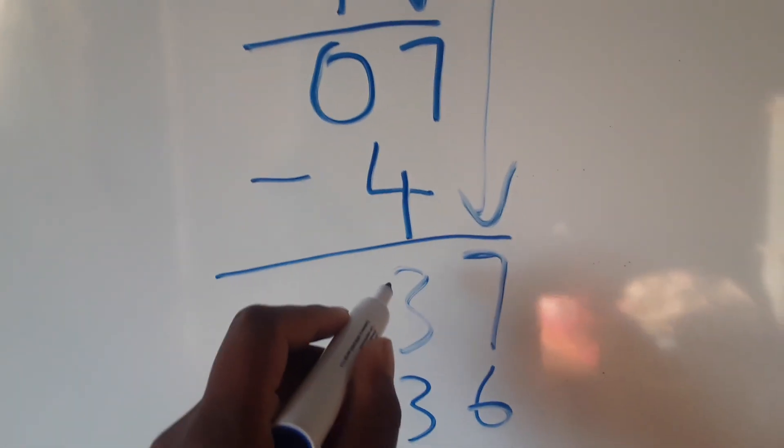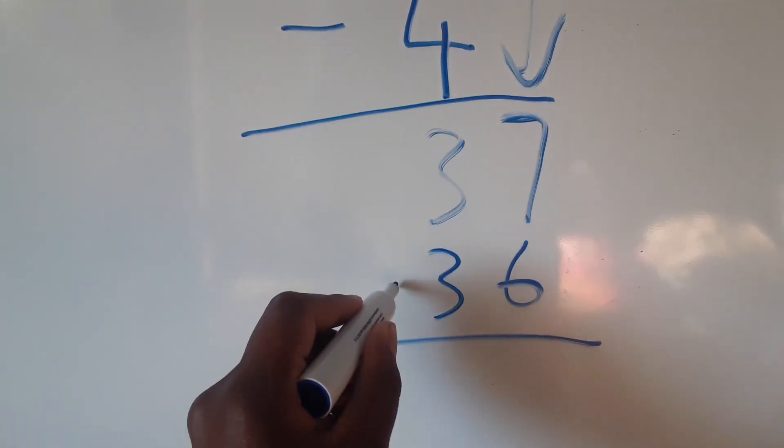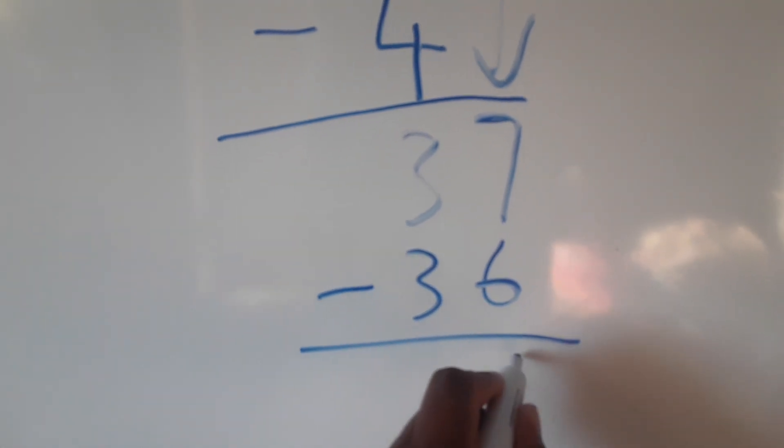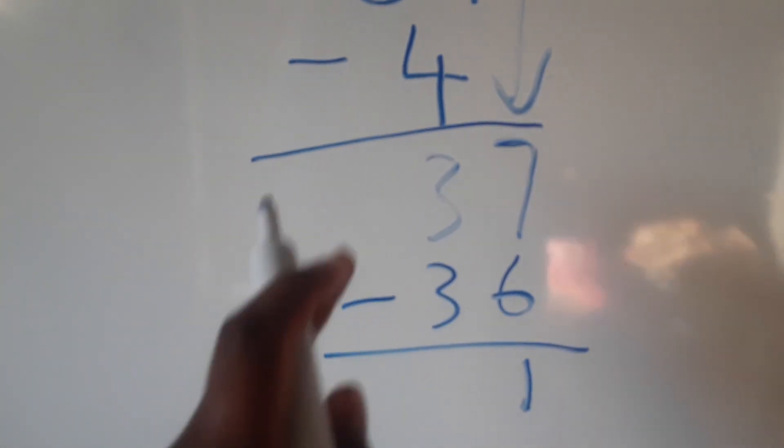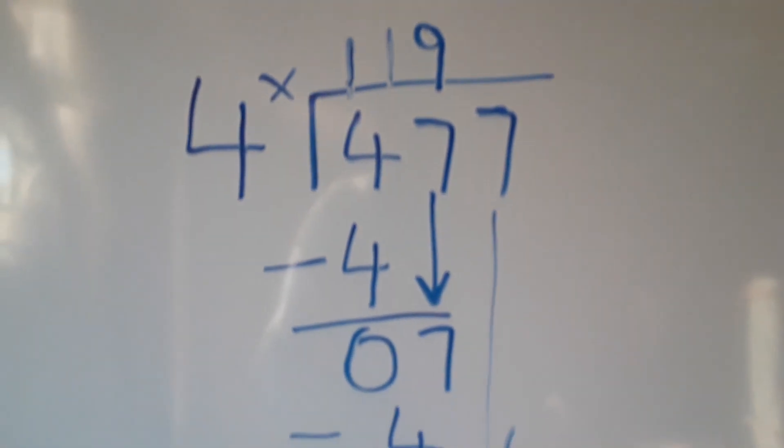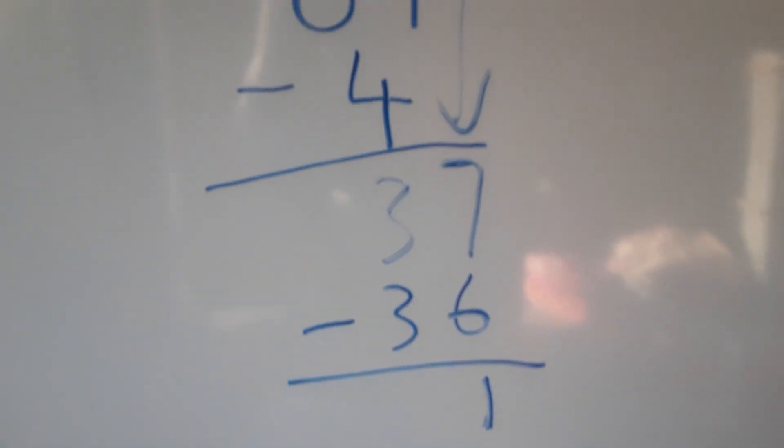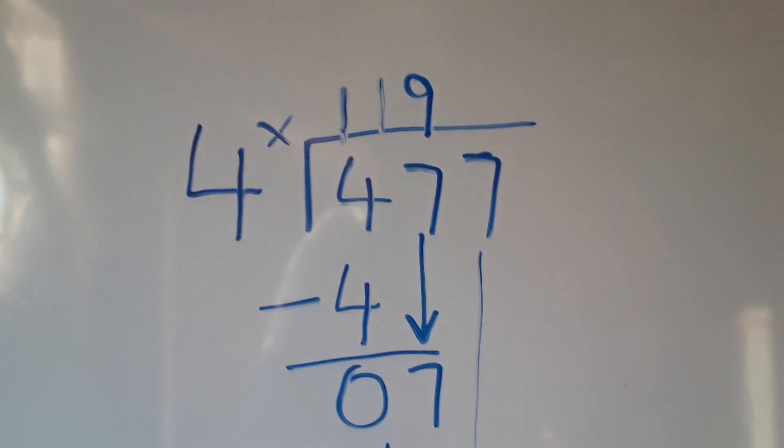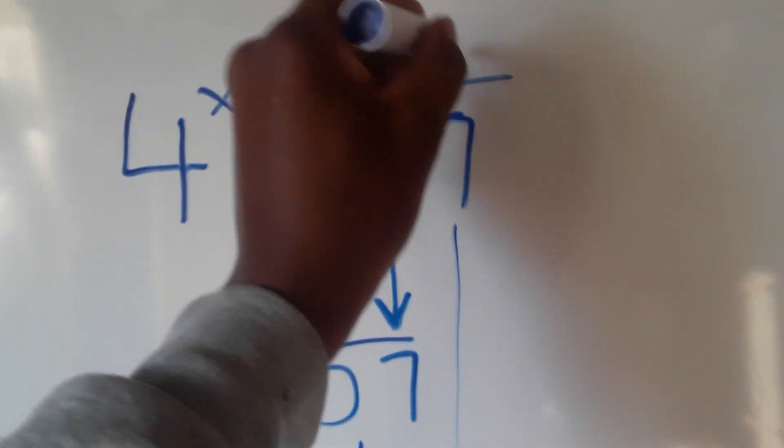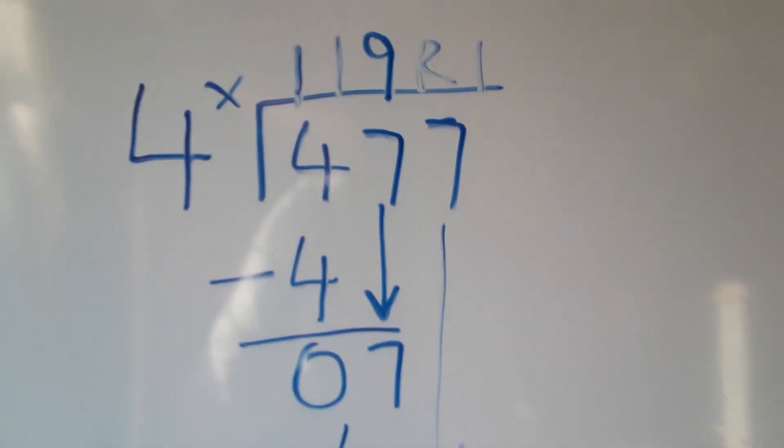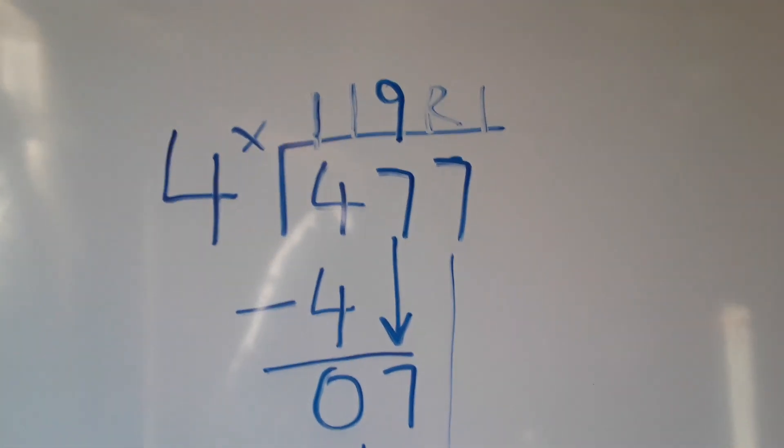So 37 minus 36, we have 1. This 1 is a remainder because there are no more numbers to drop. So we'll say R1. We write it this way, remainder 1.